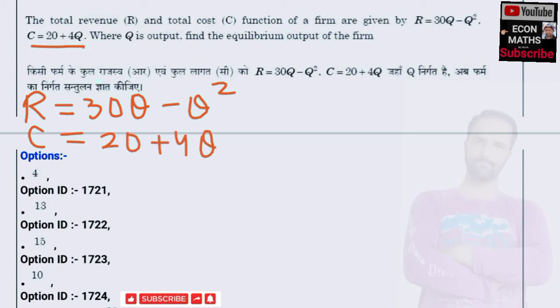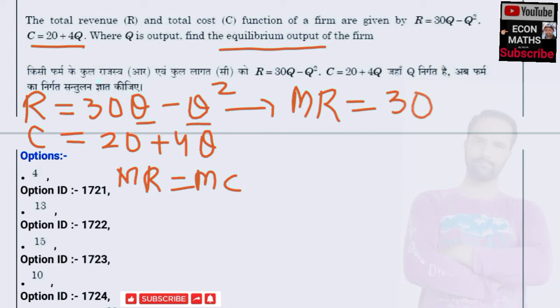The equilibrium condition requires that marginal revenue should be equal to marginal cost, so we need to first find the marginal revenue. Marginal revenue is the derivative of the revenue function with respect to output. The derivative of Q is 1, so we get 30, and the derivative of Q² is 2Q, so marginal revenue is 30 - 2Q.